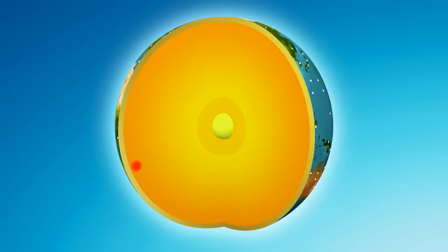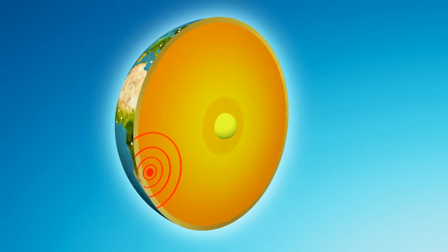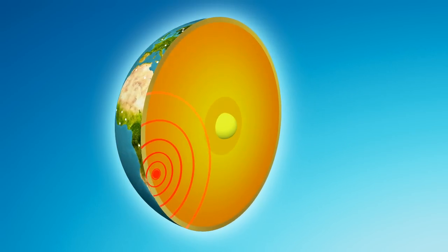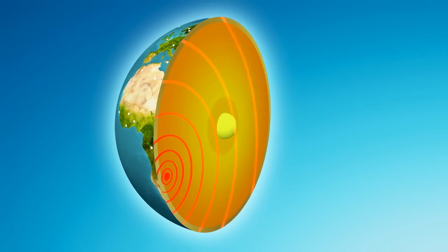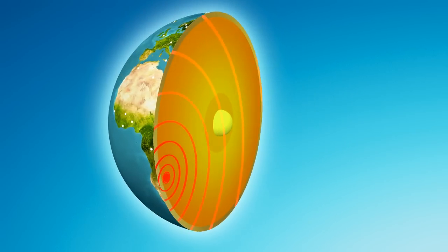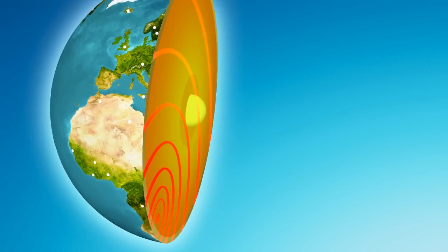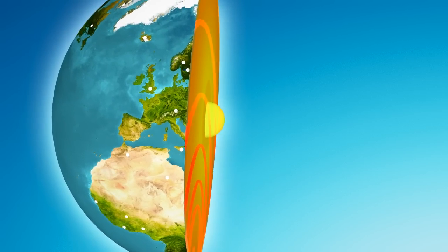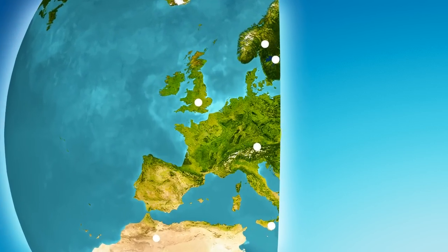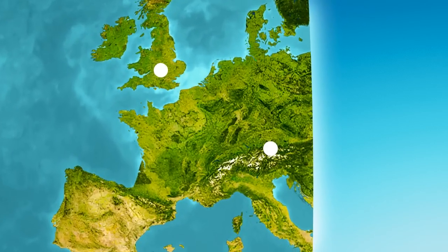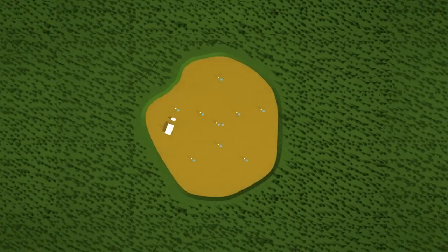What you see here is the inside of the Earth. The red circles are seismic waves caused by an event deep in the ground, like an earthquake. Seismic waves cause vibrations in the ground. When they arrive at a station, they are detected by its seismometers.